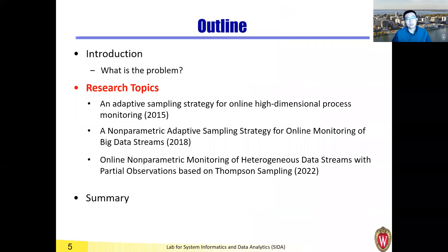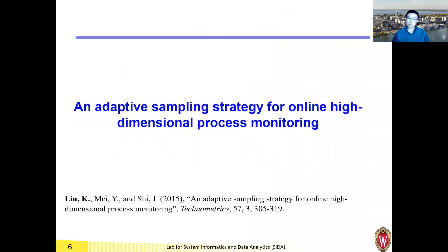The first paper I'll discuss is a Technometrics paper published in 2015, which lays important ideas for tackling big data streams with partial observations. However, after publishing we realized there are some big limitations, which motivated the second paper I'll talk about later.